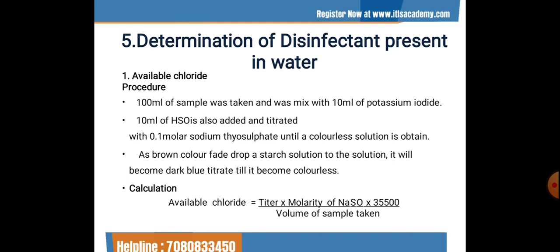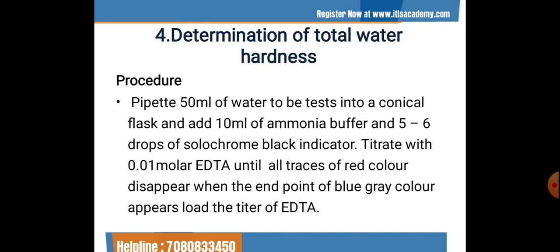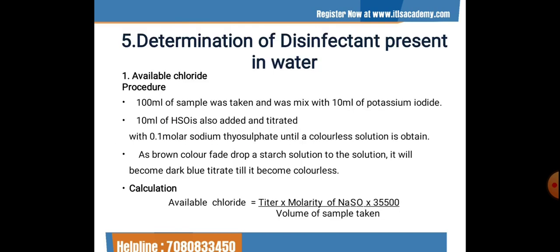The indicator used here is starch solution only — not phenolphthalein or solochrome black. The starch shows a dark blue color. We then titrate until we obtain a colorless solution. Once we reach the endpoint — a colorless solution — we stop the reaction and note down the volume of sodium thiosulfate solution used.